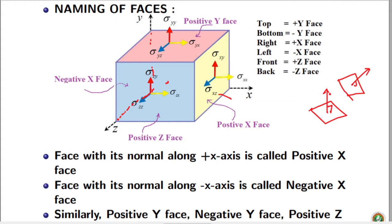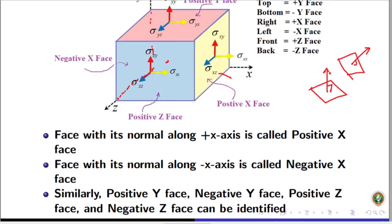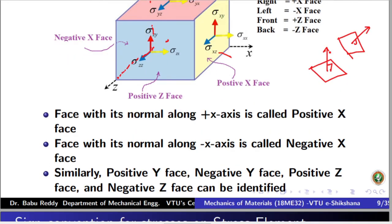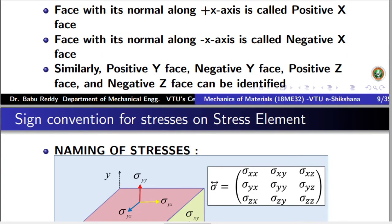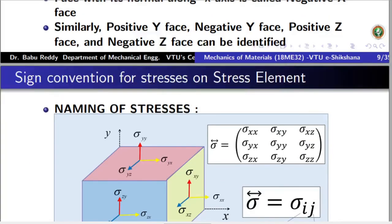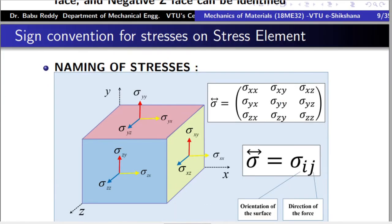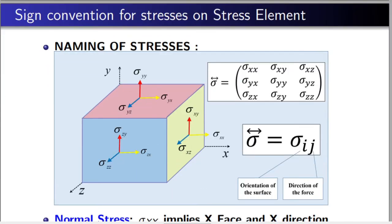To summarize: a face with its normal along the positive x-axis is called the positive x-face, and the face with its normal along the negative x-axis is called the negative x-face. Similarly, we identify the positive y-face, negative y-face, positive z-face, and negative z-face. That is about naming of the faces; now let us move to naming of the stresses.